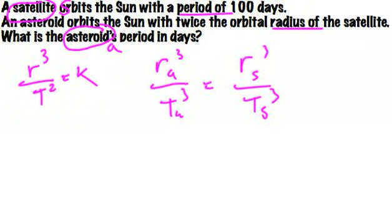Okay, so let's label a couple things in the question. We have the satellite's period, this guy here, that's T satellite, and our goal is T asteroid. Now we need some way of relating R asteroid to R satellite.